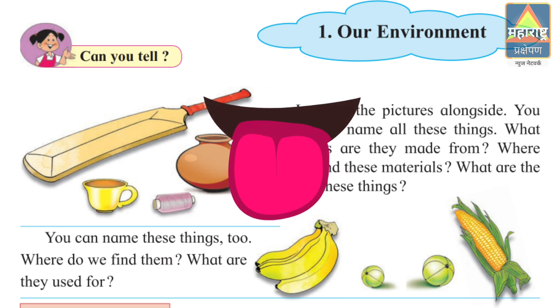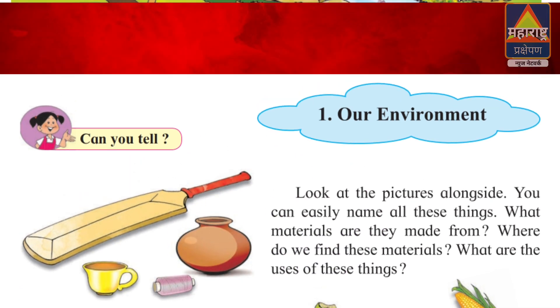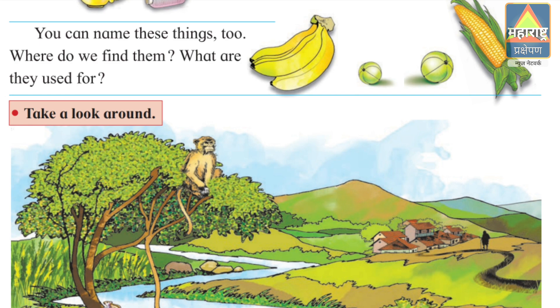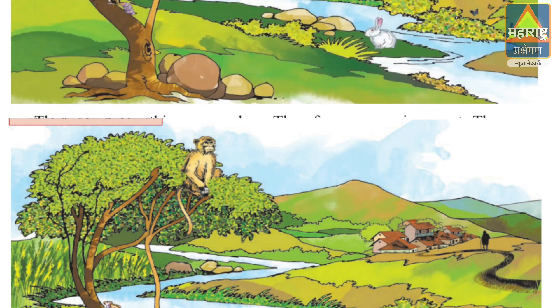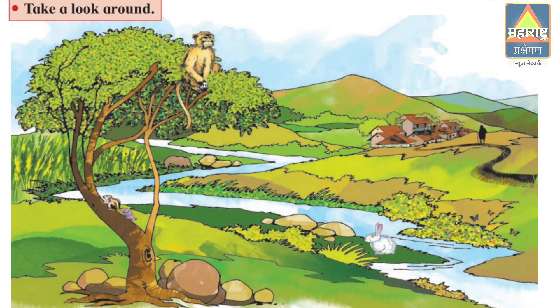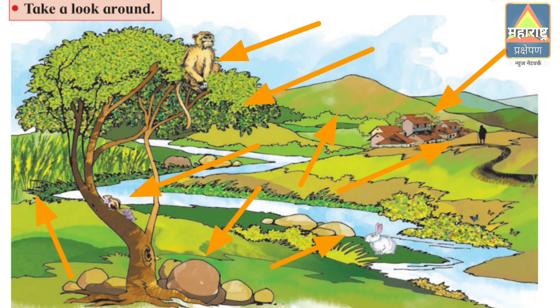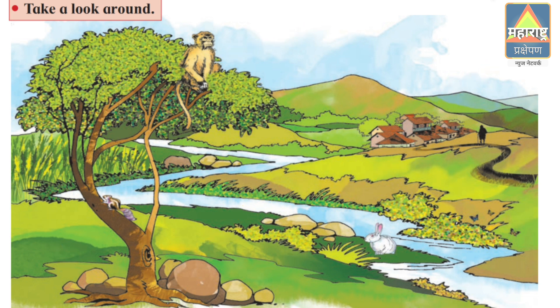We see the picture. There are many things around us. In that picture we see many things: a tree, a monkey, mountains, a river, stones, a rabbit, and many more things. So they form our environment. There are stones, rocks, and soils.